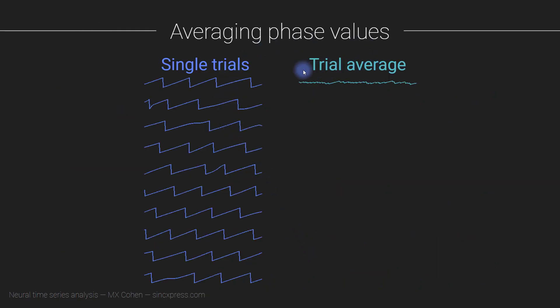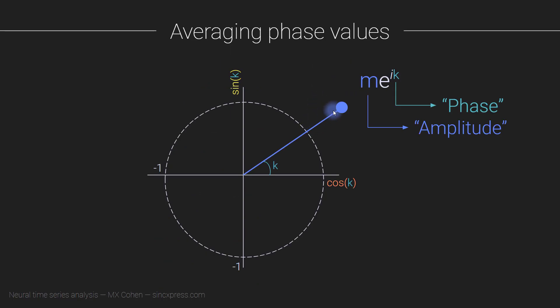This is now a slide taken from the video on inter-trial phase clustering. This was a reminder about how if you want to look for consistency over trials in the phase angle time series, you cannot simply average all of these phase angles together as if they were normal numbers on a number line. The reason for that is that these are angles. They go around in a circle, not lengths in a traditional sense or numbers on a linear number line.